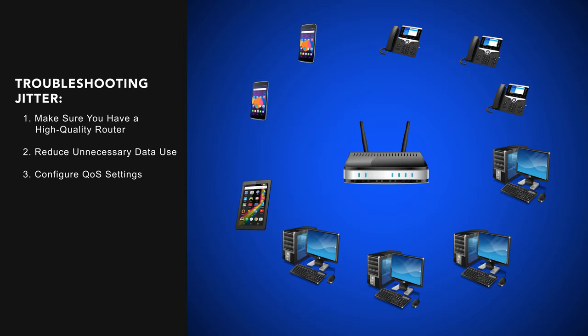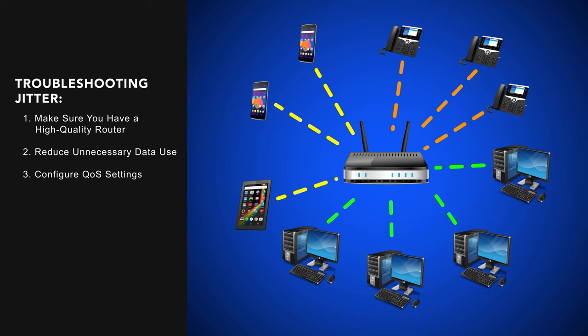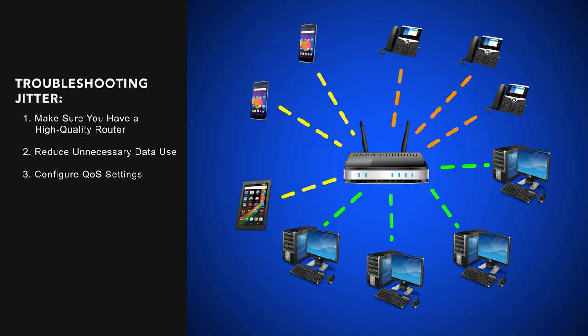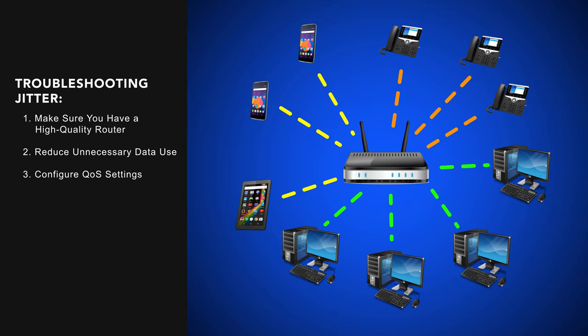And finally, number three, configure QoS settings. Your router's quality of service, or QoS, settings enable you to prioritize certain devices and data types, such as VoIP data packets or gaming data, so that the router ensures these devices receive sufficient data when the network is crowded.